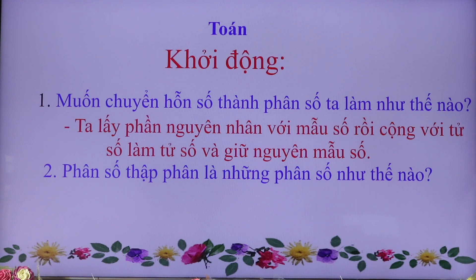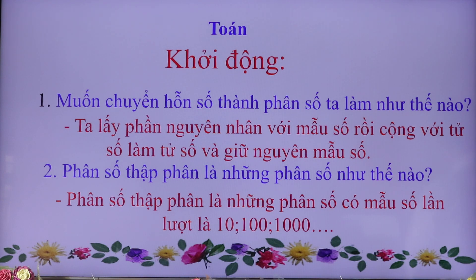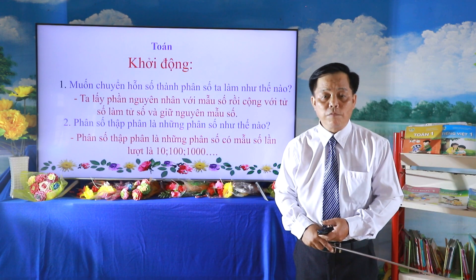Câu hỏi thứ nhất: muốn chuyển hỗn số thành phân số ta lấy phần nguyên nhân với mẫu số rồi cộng với tử số làm tử số và giữ nguyên mẫu số. Phân số thập phân là những phân số có mẫu số lần lượt là 10, 100, 1 ngàn. Vậy các em nắm được 2 câu hỏi này rồi, thầy chúc mừng các em.